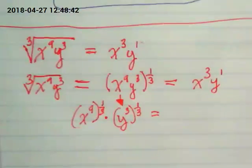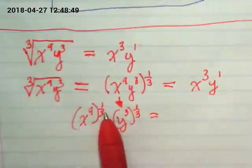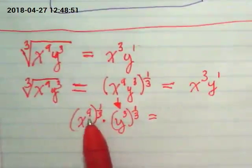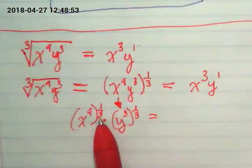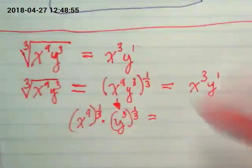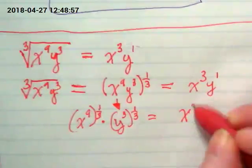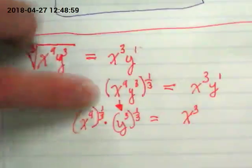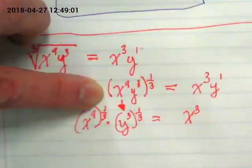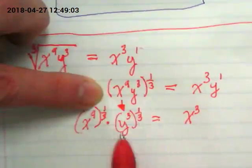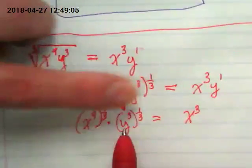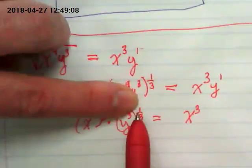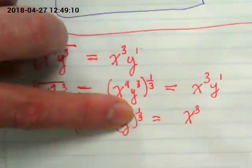I want you to think about what would happen when I multiply, because this is the power to the power rule. This one-third would get multiplied by nine. What would nine times one over three be? Three. Because nine times one would be nine, divided by three, we'd get back to that three. And y to the third, times one-third, three times one would be three, over three, one.